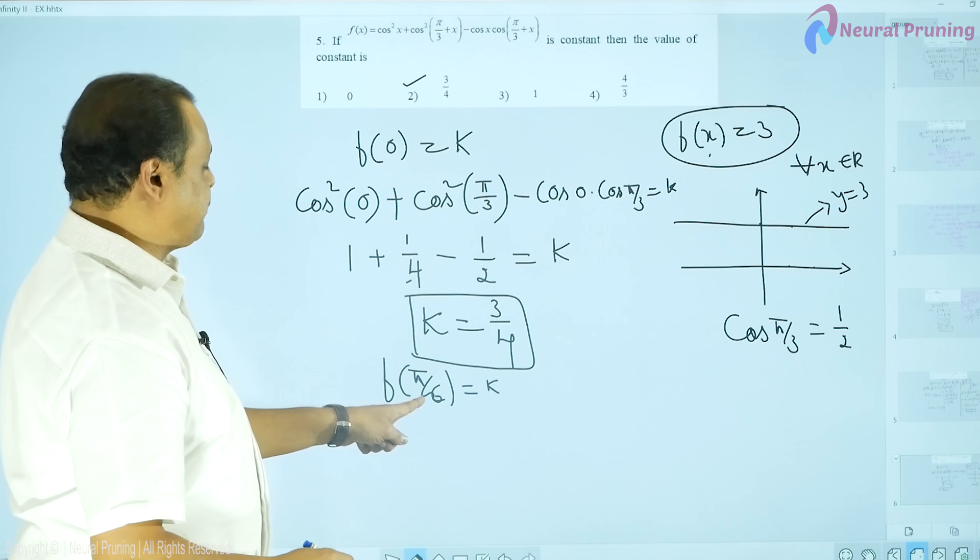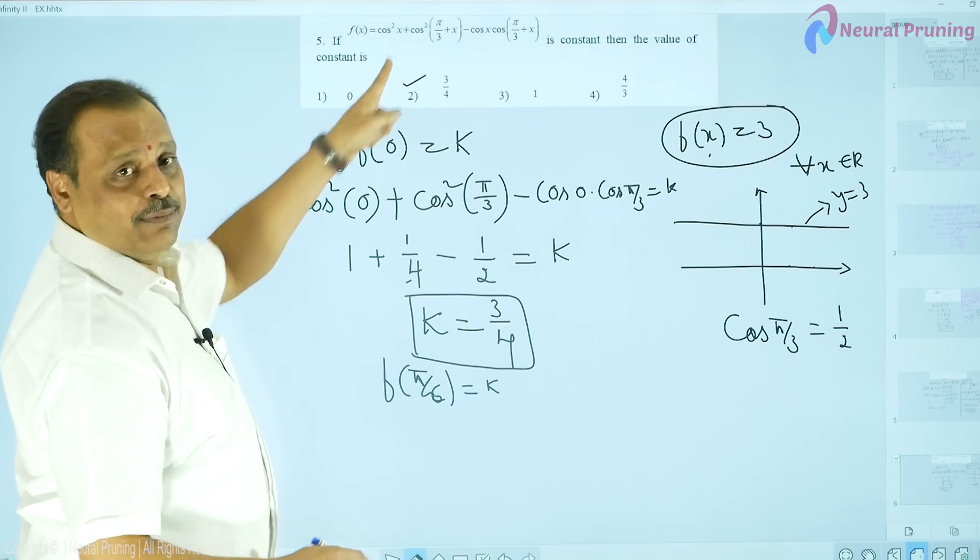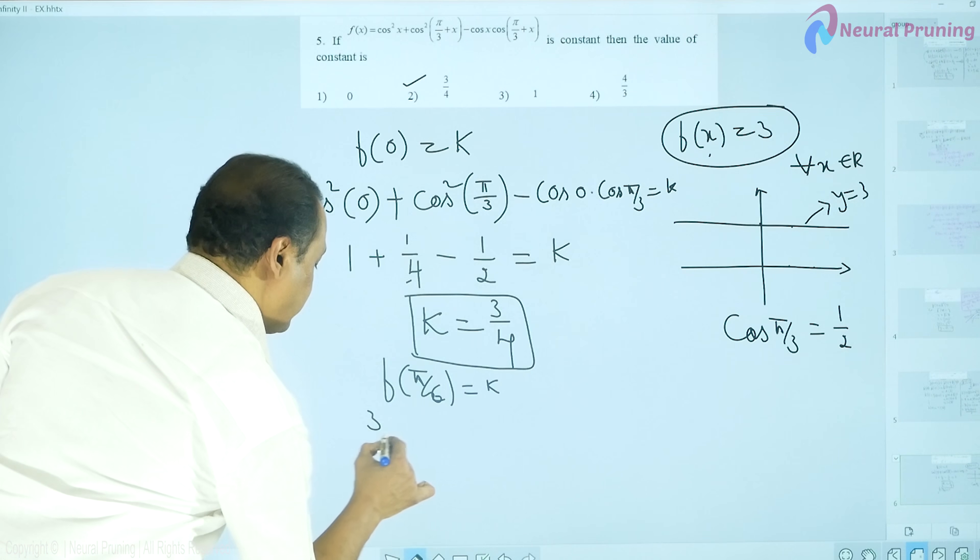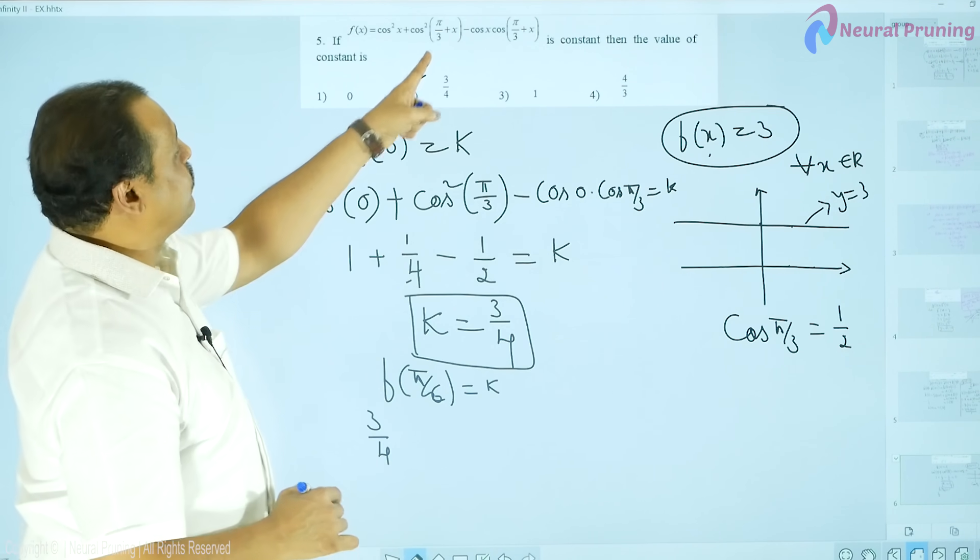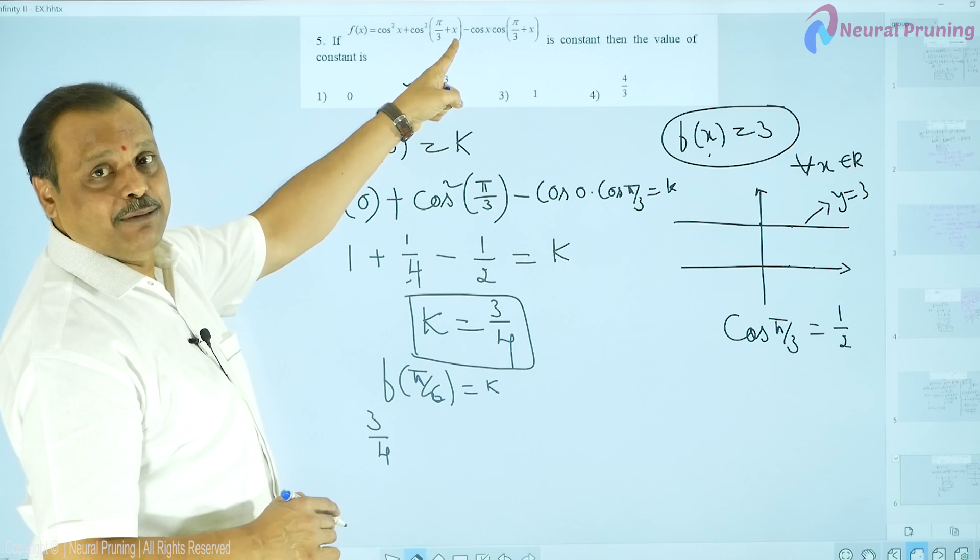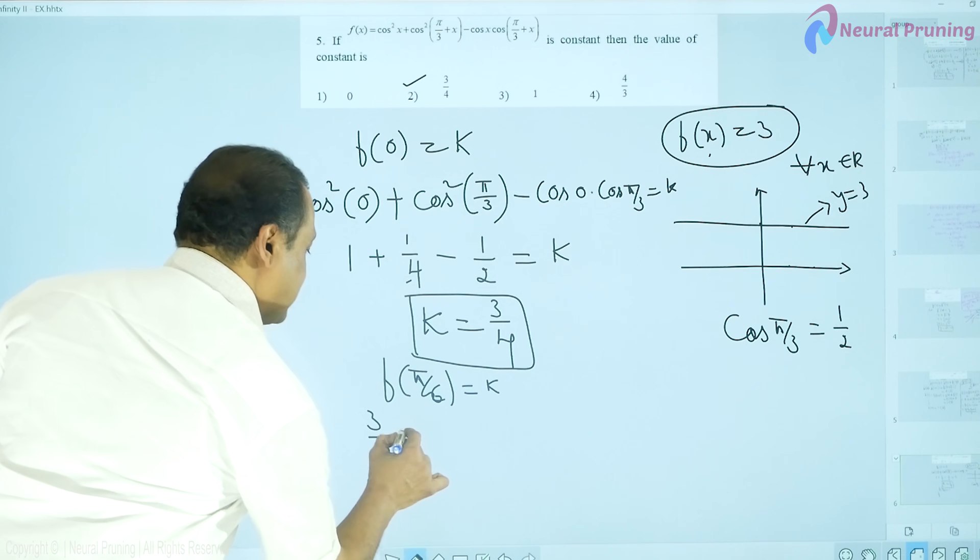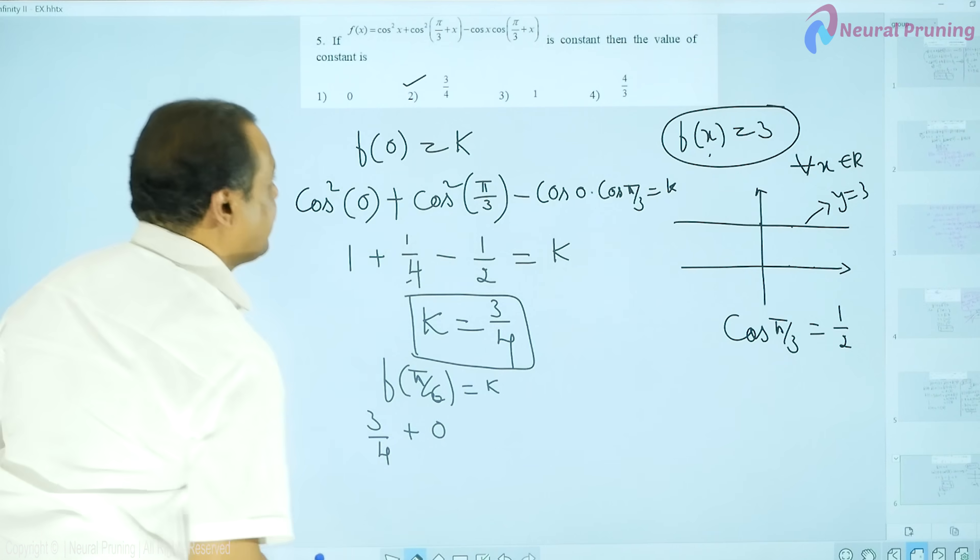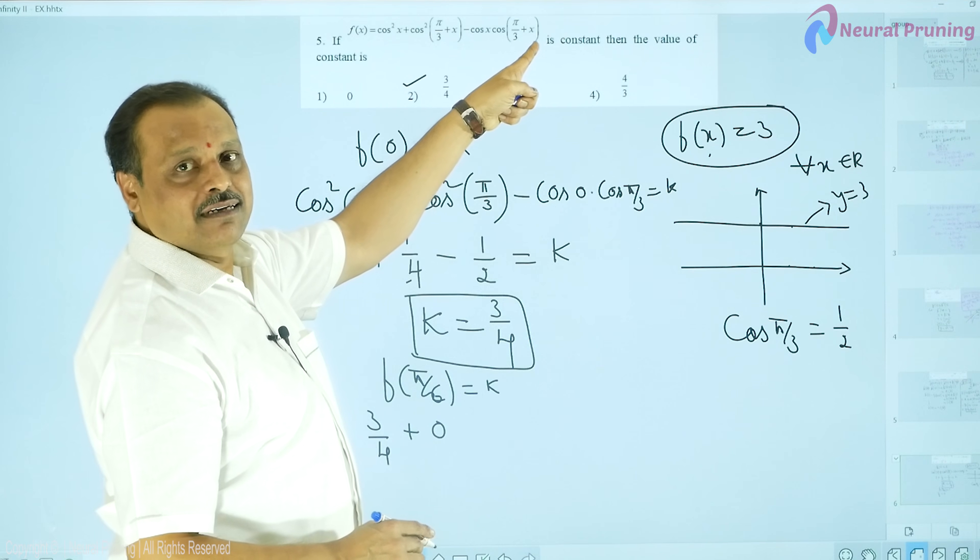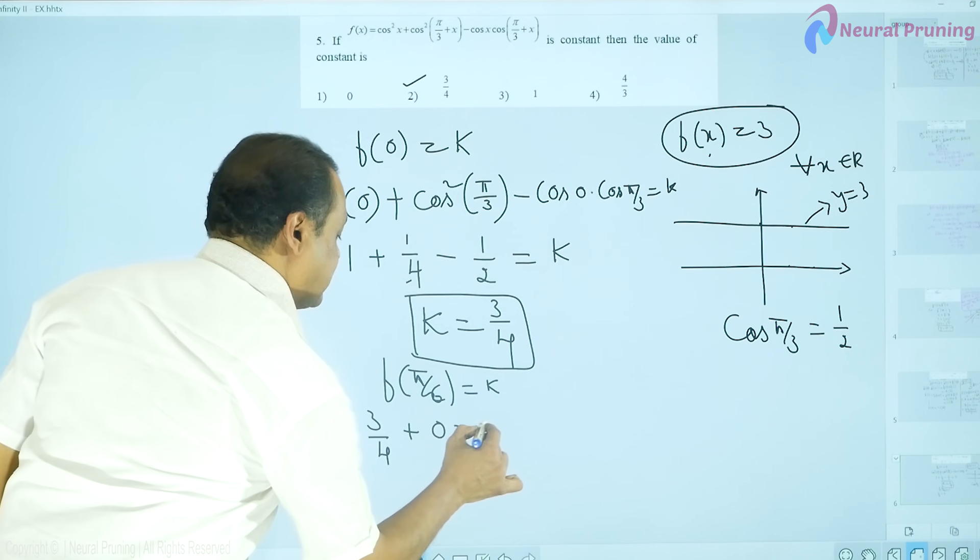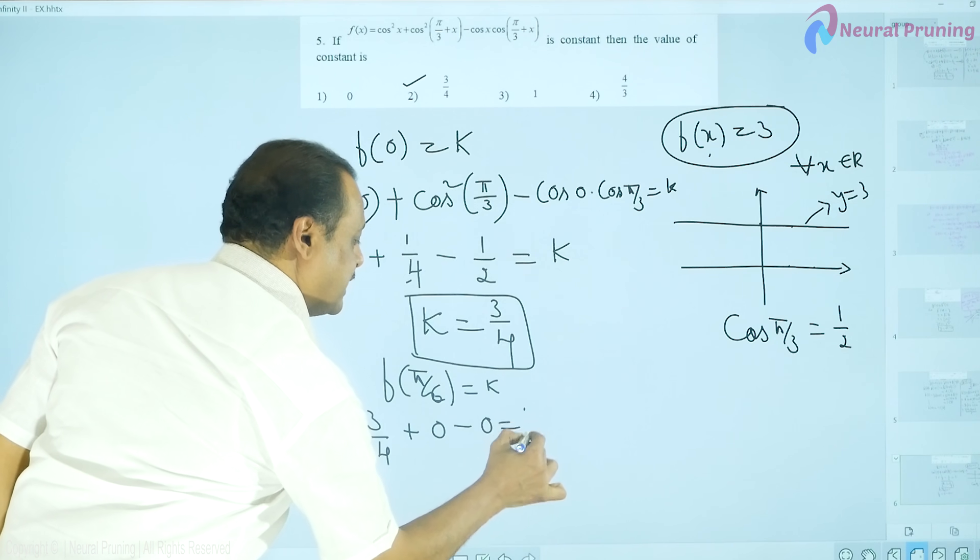If I substitute x as pi by 6 here, what is cos square pi by 6? It is 3 by 4 because root 3 by 2 whole square. And what is pi by 3 plus pi by 6? It is pi by 2. Cos pi by 2 becomes 0. So, therefore, it is 0 here. And minus cos, this is again cos pi by 2 which becomes 0. And, therefore, it is equal to k.